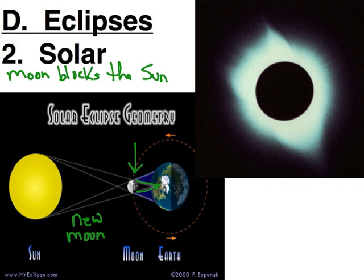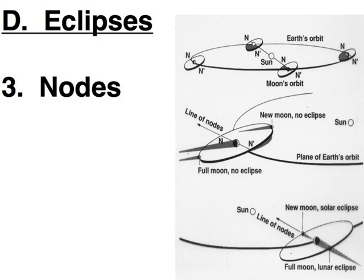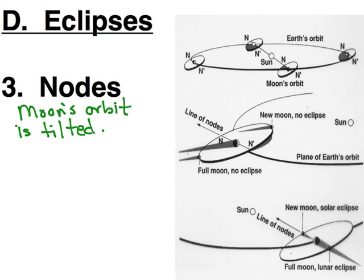Those are our two types of eclipses. Of course, full moon occurs once a month and new moon occurs once a month — so why don't we get eclipses once a month? That's because the moon's orbit is tilted, and the nodes are the pivot points of that tilt.